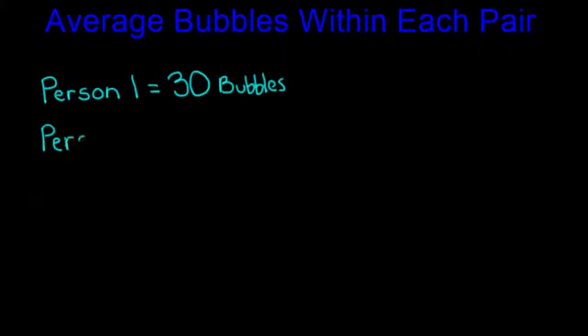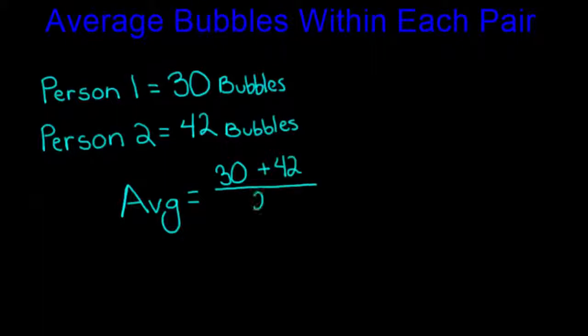Each pair should average their individual bubble counts to create a group average. For example, let's say the first person in the group counted 30 bubbles and the second person in the group recorded 42 bubbles. You would then add these two counts together and divide by 2 in order to get your group average, which in this case is 36 bubbles.